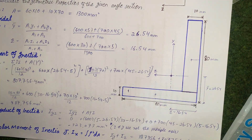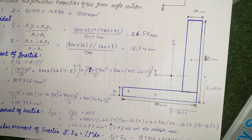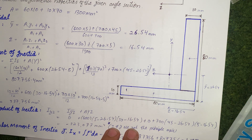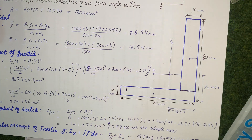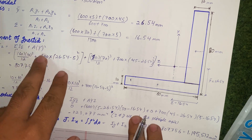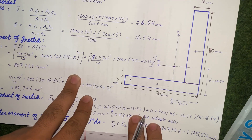The axes passing through this centroid are called the centroidal axes. Since this L-section is not symmetrical, the centroidal axis and the principal axis will not coincide — they will lie in different locations. We will discuss the principal axis location later.